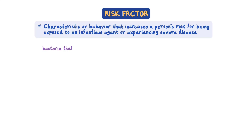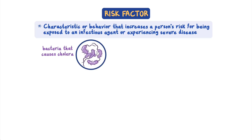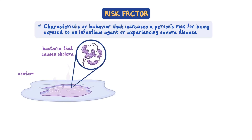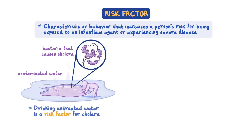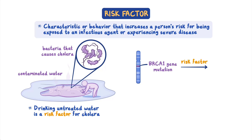For instance, the bacteria that causes cholera is often found in contaminated water. People become infected by drinking this water. So, drinking untreated water is a risk factor for cholera. Similarly, having the BRCA1 gene mutation is a risk factor that increases a person's risk for developing breast cancer.